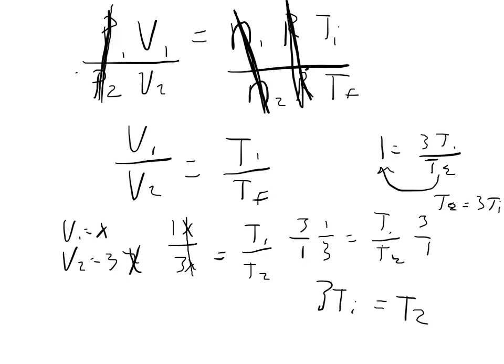I know what the initial temperature was. The initial temperature, it gives me in the problem, it says it's 1.8 degrees Celsius. To convert Celsius to Kelvin, I have to add 273.15. What I end up getting is 274.95 Kelvin as my initial temperature. I can multiply 274.95 by 3 and find out what my final temperature was.